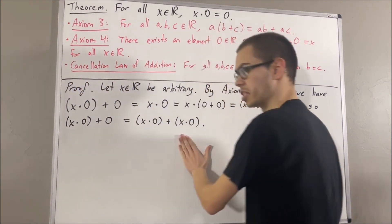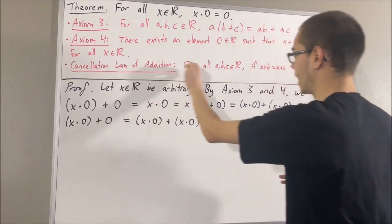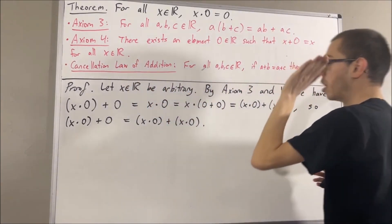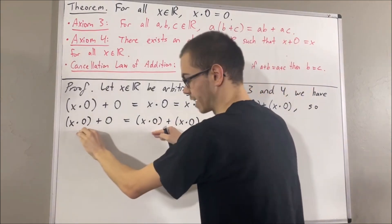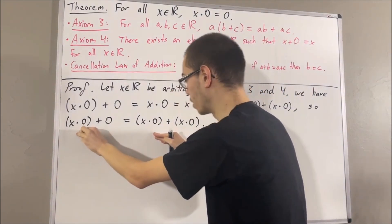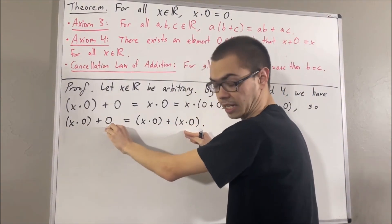And now, as you can see, we're in a position to apply the cancellation law of addition. Applying the cancellation law of addition, we can cancel out the x times 0's. So, we're left with 0 equals x times 0.